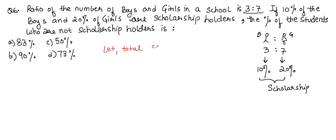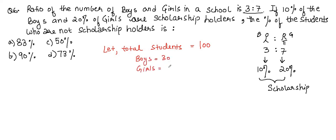Assume total students = 100. In a 3:7 ratio, boys = 30 and girls = 70. Now, 10% of boys are scholarship holders, so 30 × 10% = 3 boys have scholarships. And 20% of girls: 70 × 20% = 14 girls have scholarships.